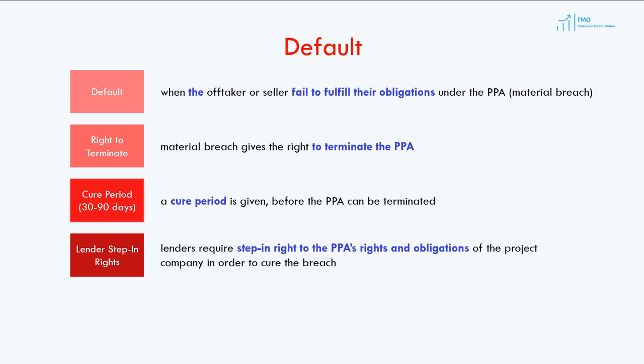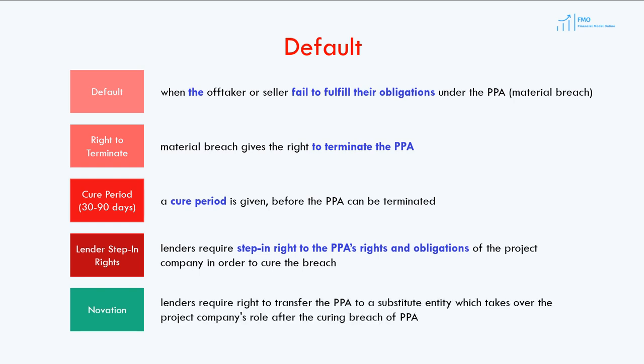The PPA should also allow the PPA rights and obligations to be transferable to a new party — a substitute entity — in case the energy seller cannot continue. This transfer is generally referred to as a novation of the PPA.